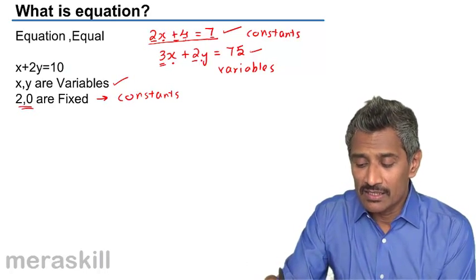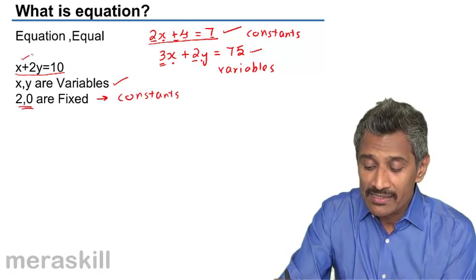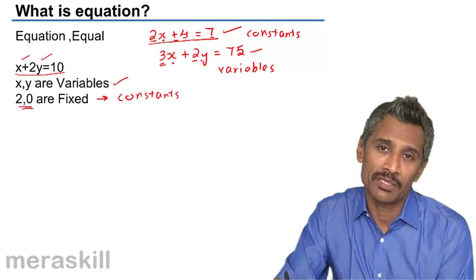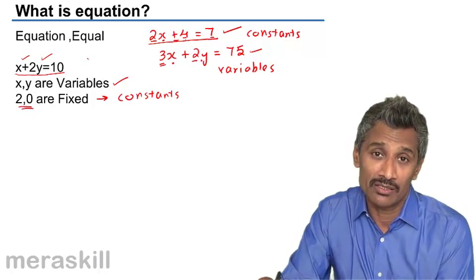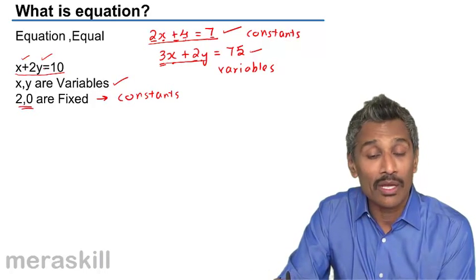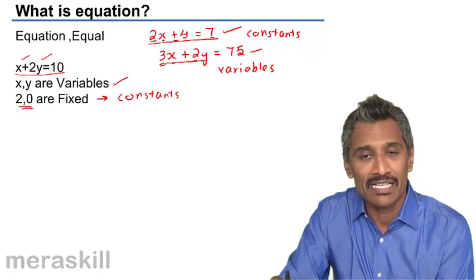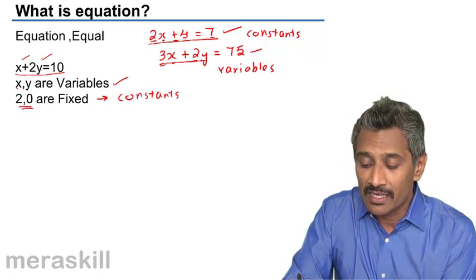So let's consider this particular equation: x plus 2y is 10. Here x and y are variables because in this particular equation they could have one value, but in another equation the x and y could have different values. Although they are x and y, their values could be different from what you have over there. Hence they are called variables.